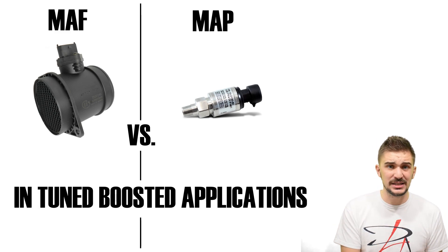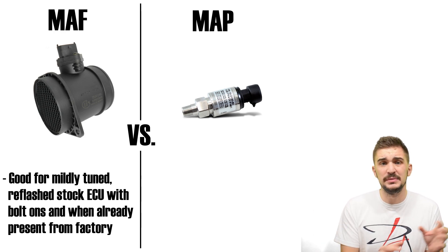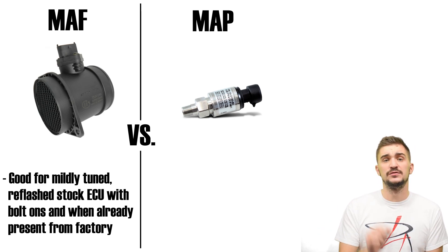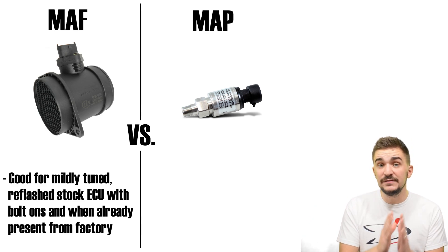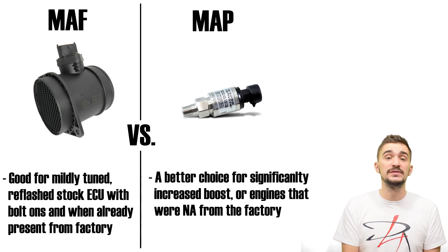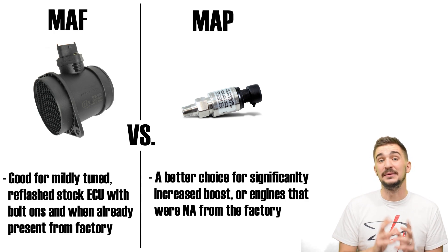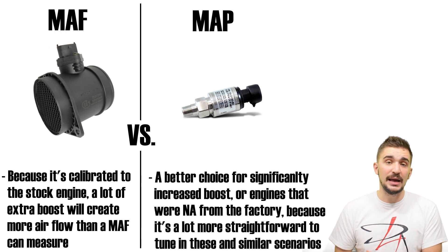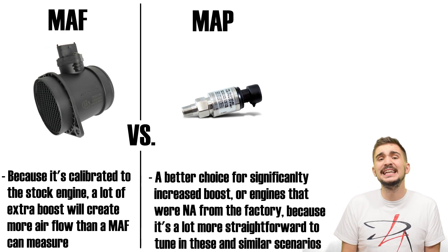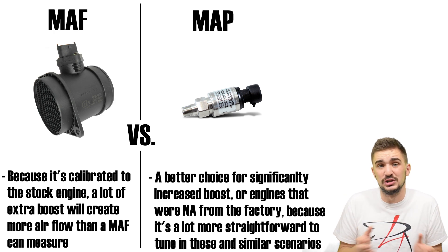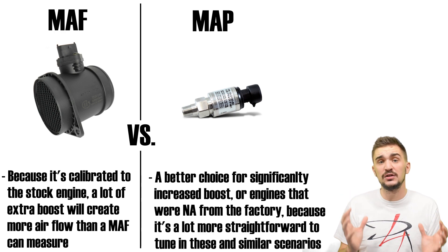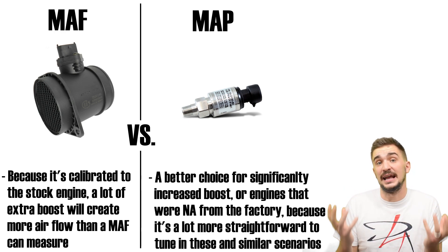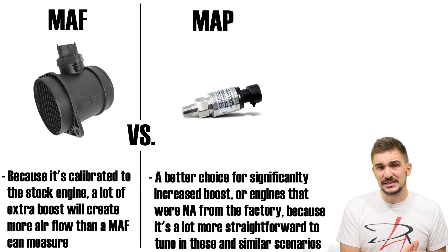When it comes to MAF versus MAP sensors in boosted applications: if you're tuning a factory-boosted engine and increasing boost slightly by reflashing the ECU with some bolt-ons, and that engine already has a MAF sensor from the factory, keep using that MAF sensor for air mass measurements. But if you're significantly increasing boost or boosting a previously naturally aspirated engine, a MAP sensor is a better idea — it makes tuning more straightforward. A MAF sensor is calibrated to stock parameters and expected airflow. When you significantly increase boost, you'll exceed the calibration range, making the stock MAF sensor inaccurate and potentially a source of engine damage in extreme cases.